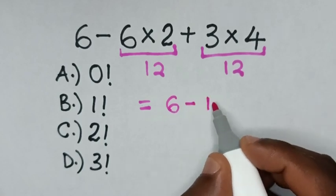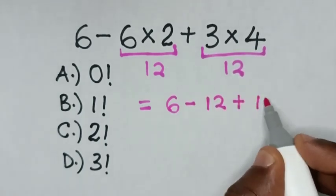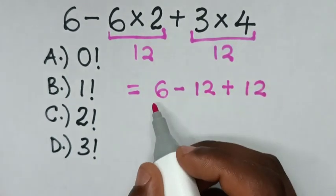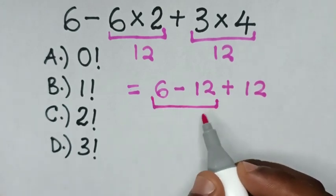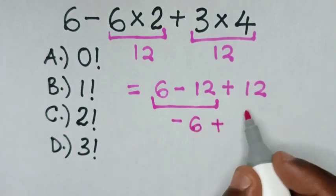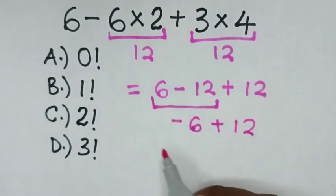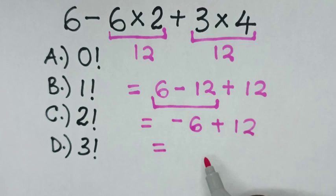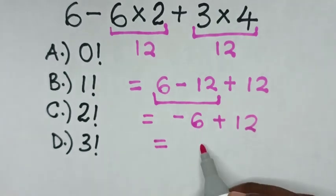So, 6 minus 12 plus 12. Then we'll deal with this first operation of 6 minus 12 is negative 6, then plus 12.